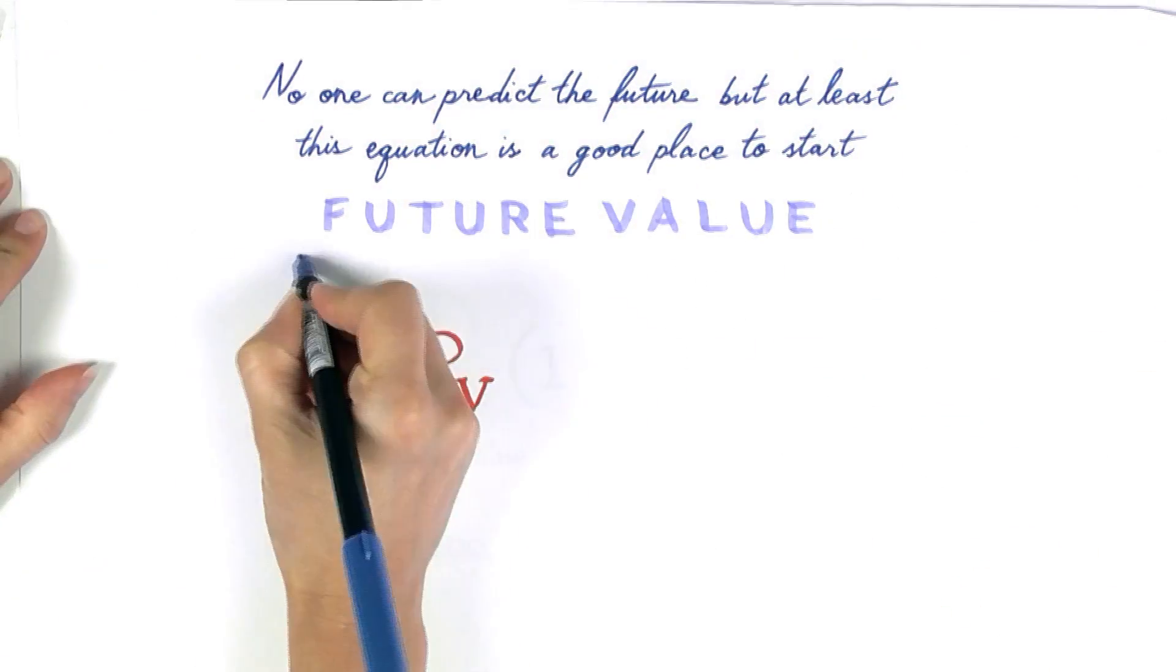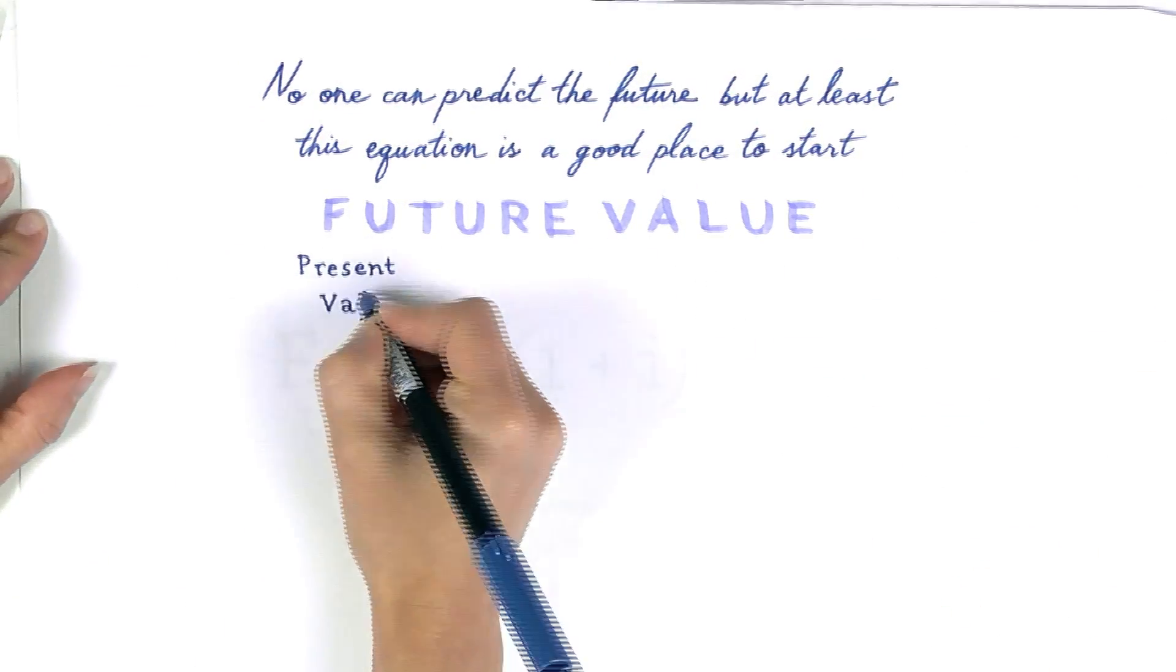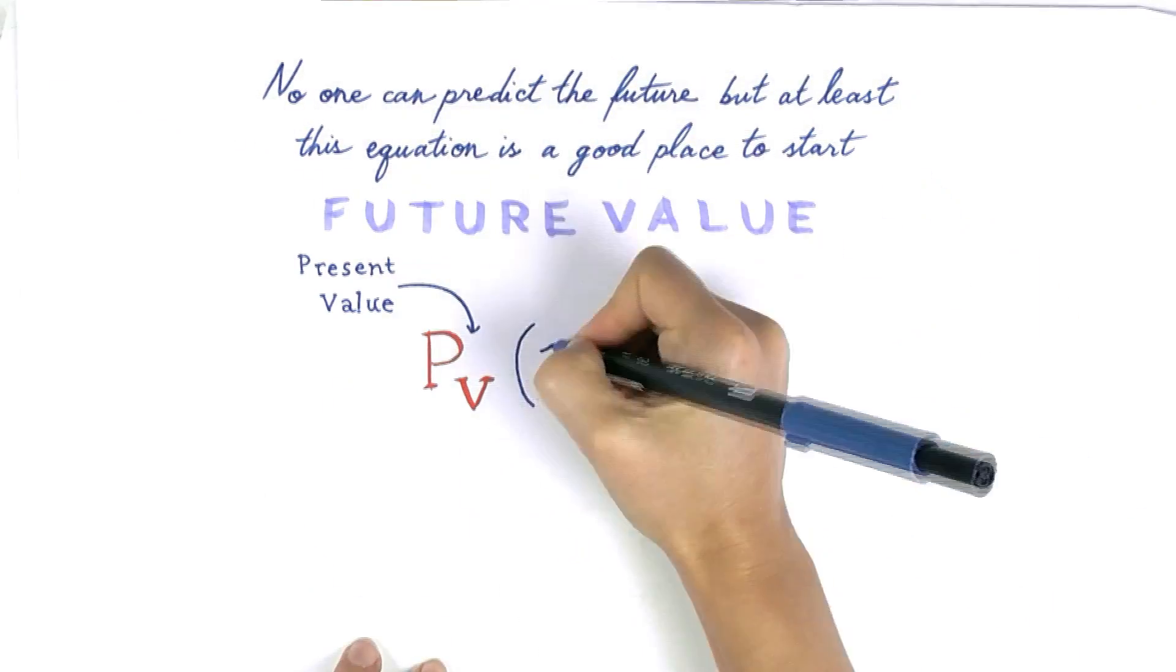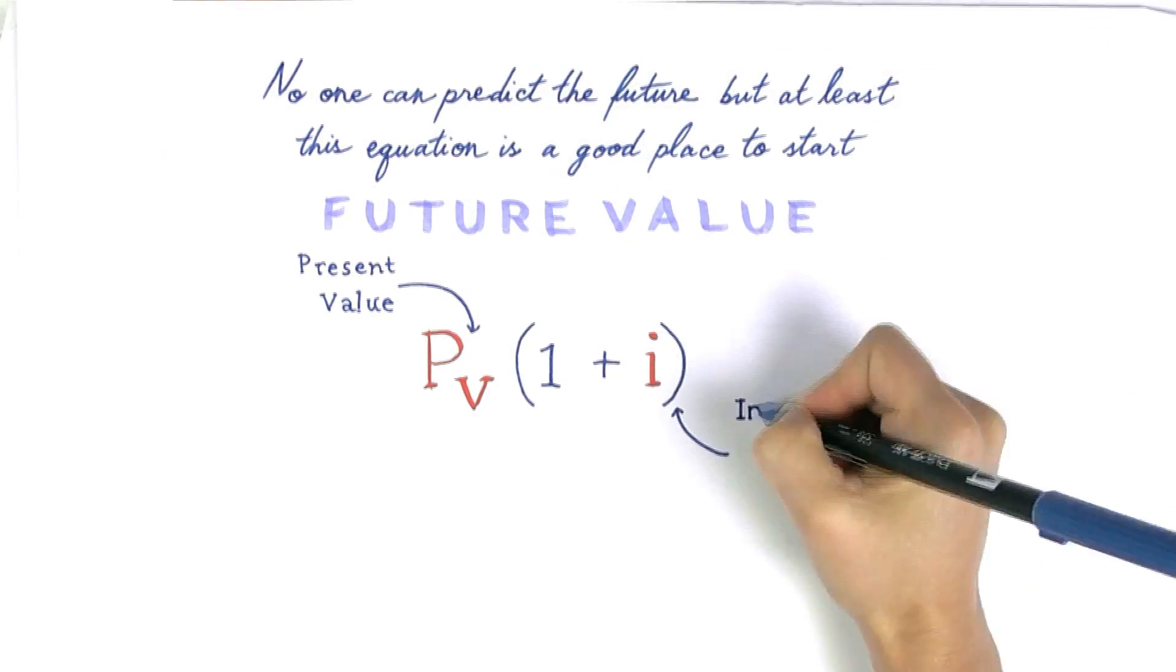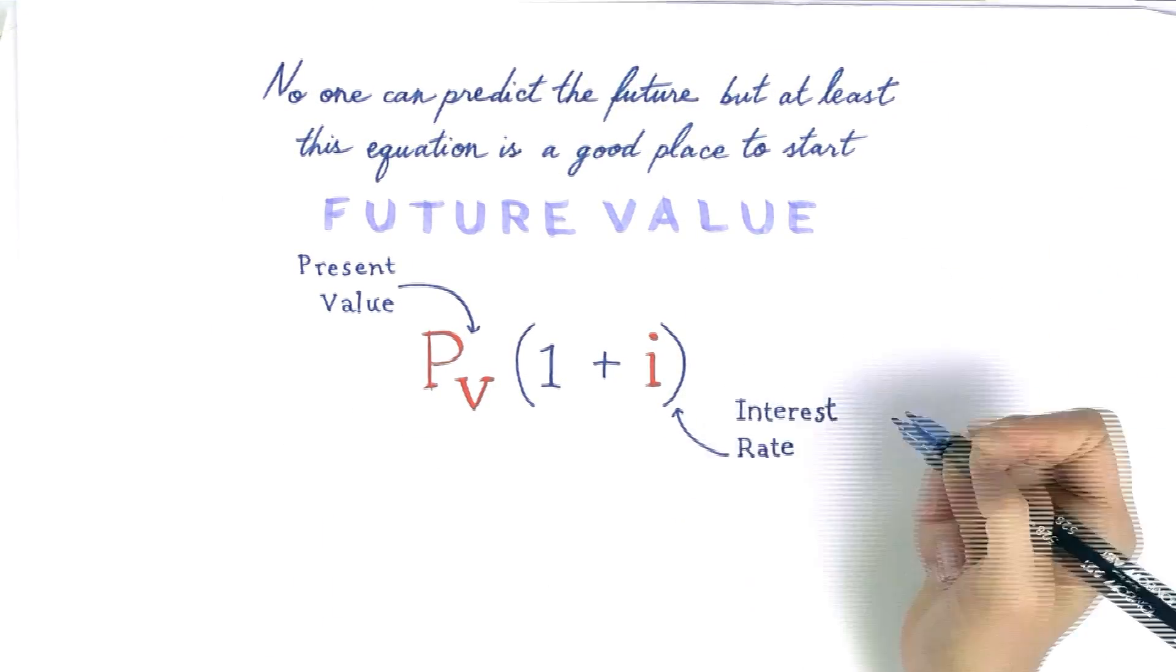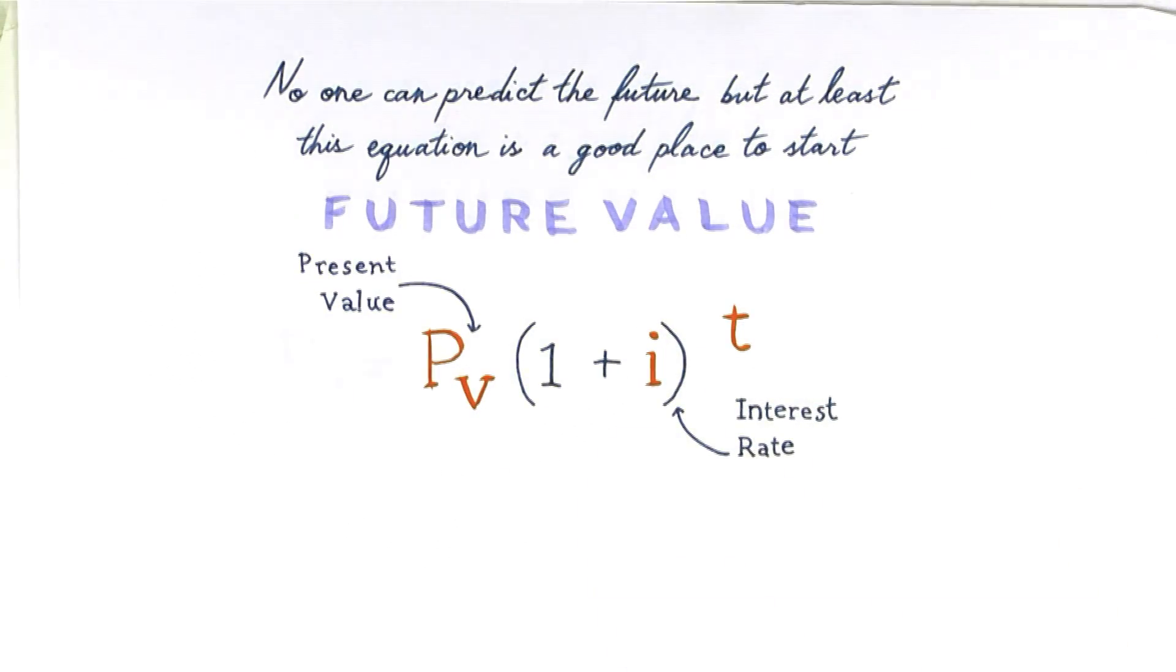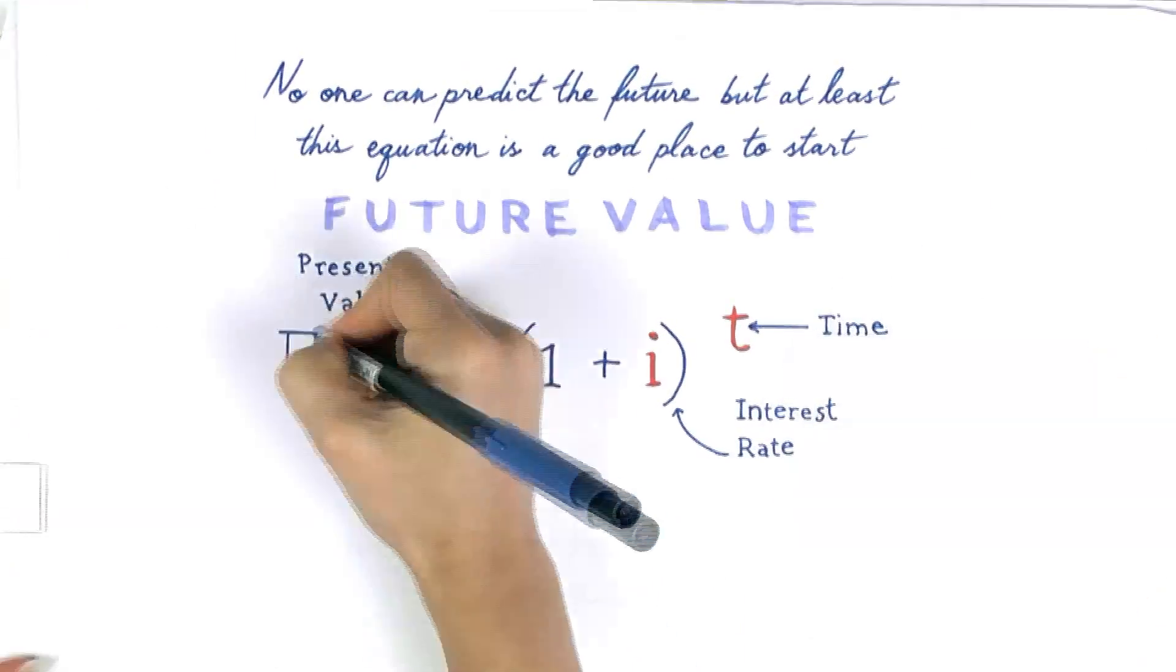Writing it out, you can see how the present value of your money, otherwise known as the principal, the interest rate, which is the average annual amount you'll make on your money, and the amount of time you hold the investment for, interact.